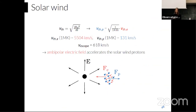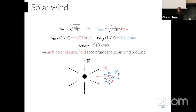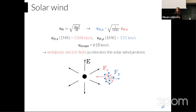Electrons are much lighter than protons, so at the same temperature their thermal velocity is far greater. At one million Kelvin, the thermal speed of electrons is ~5,500 km/s versus only ~130 km/s for protons. Since the Sun's escape velocity is 600 km/s, almost all electrons can escape while protons cannot. To maintain quasi-neutrality, an ambipolar electric field arises that accelerates protons and decelerates electrons — this is one of the most important solar wind acceleration mechanisms, and this thesis aims to quantify the electron contribution.